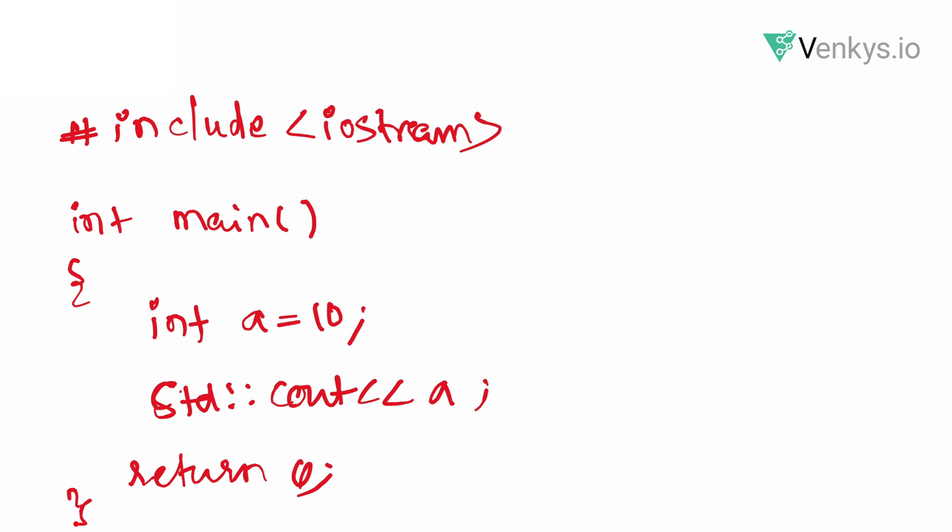This is a very fundamental program which has your main function or main method, and then you have an integer variable a which assigns value 10. Now where is this going to be stored? On the stack. Where is this 10 going to be stored? On your data section. And these program instructions are going to be stored in the code section, and these written values are going to be stored in your data section with the set of instructions to be executed one after the other.